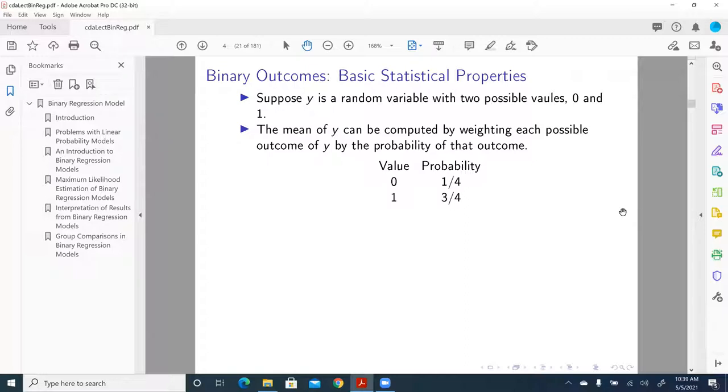That's the most common coding schema of binary response variables. And let's say for y to take on value 0, we have a probability of a quarter, 0.25, one fourth. And for y to take on value of 1, there is a probability of three fourths, three quarters or 0.75.